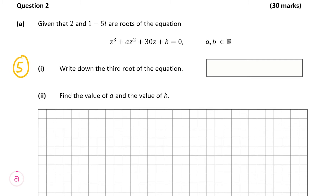We have our first two roots: 2 and 1 minus 5i. In an equation like this, we should have one real root, and our one real root here is 2. Then we have 1 minus 5i as one of our imaginary roots. So it should have two imaginary roots. If the first imaginary root is 1 minus 5i, the second imaginary root will be the conjugate of this.